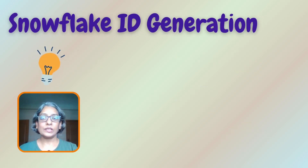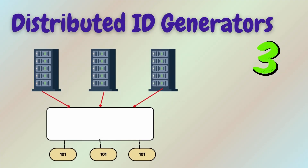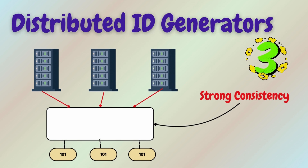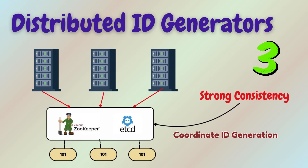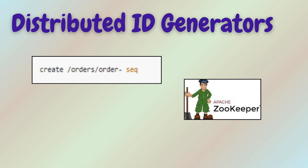Snowflake solves ordering, speed, and decentralization. But what if you need stronger consistency? Sometimes you want strong consistency across the cluster. In such cases, systems use Zookeeper or HCD to coordinate ID generation. Here is an example of Zookeeper sequential z-node creation.